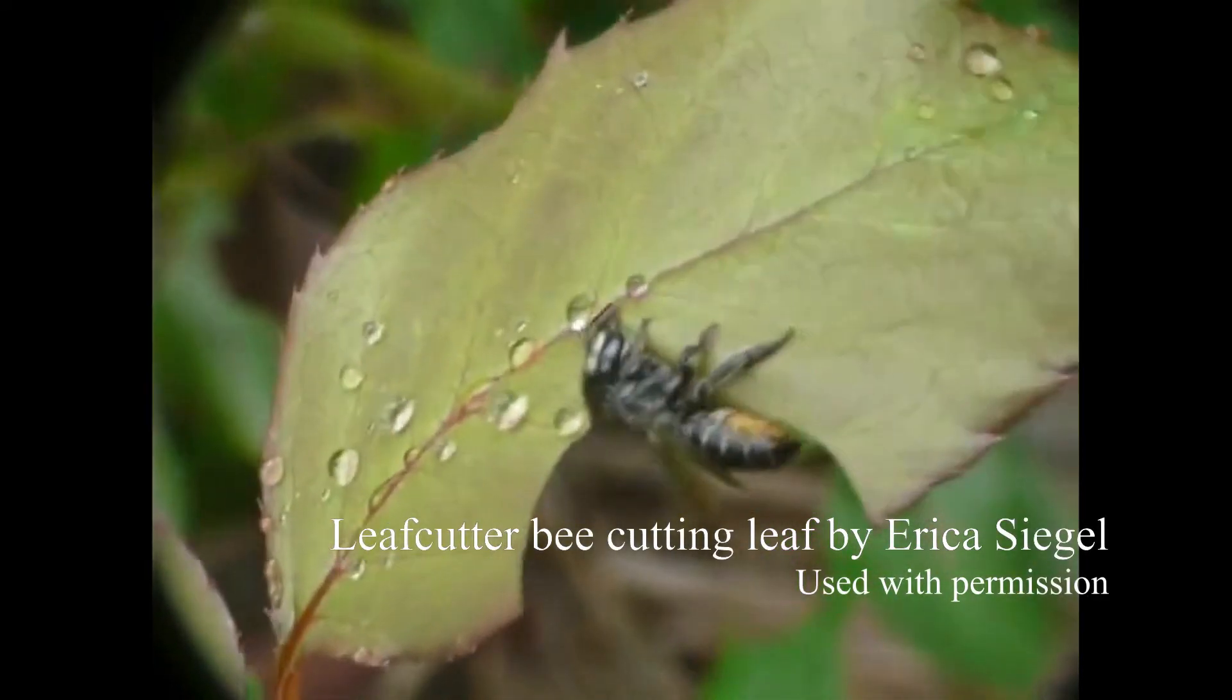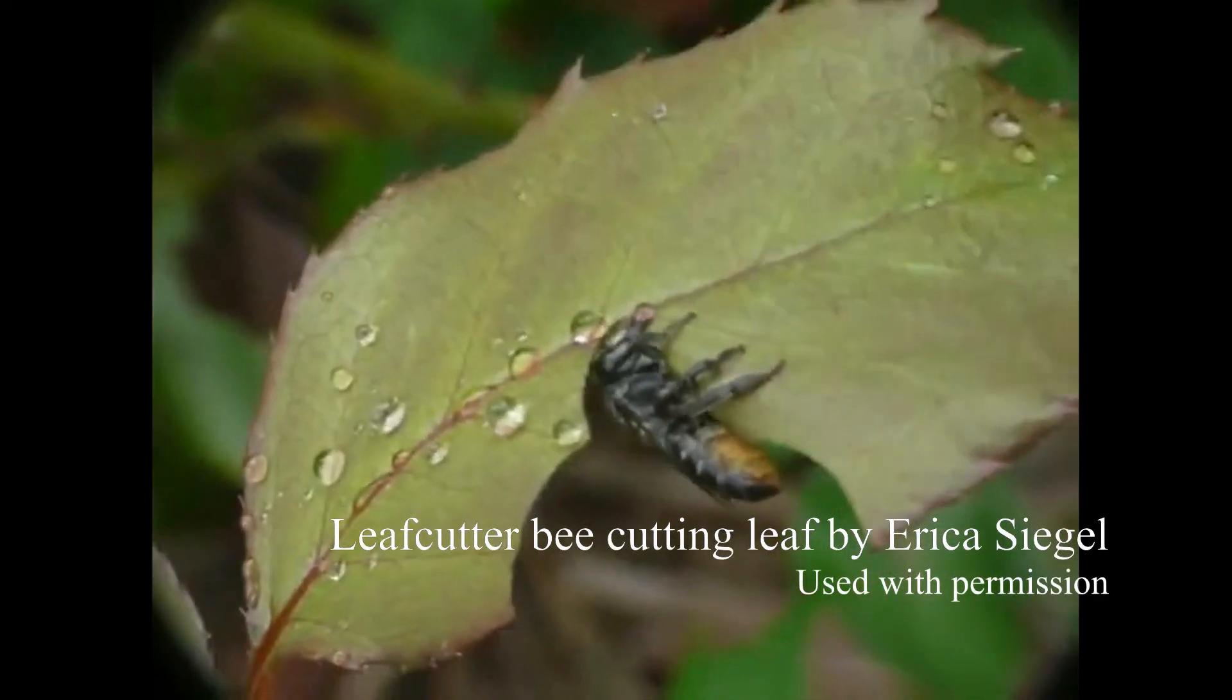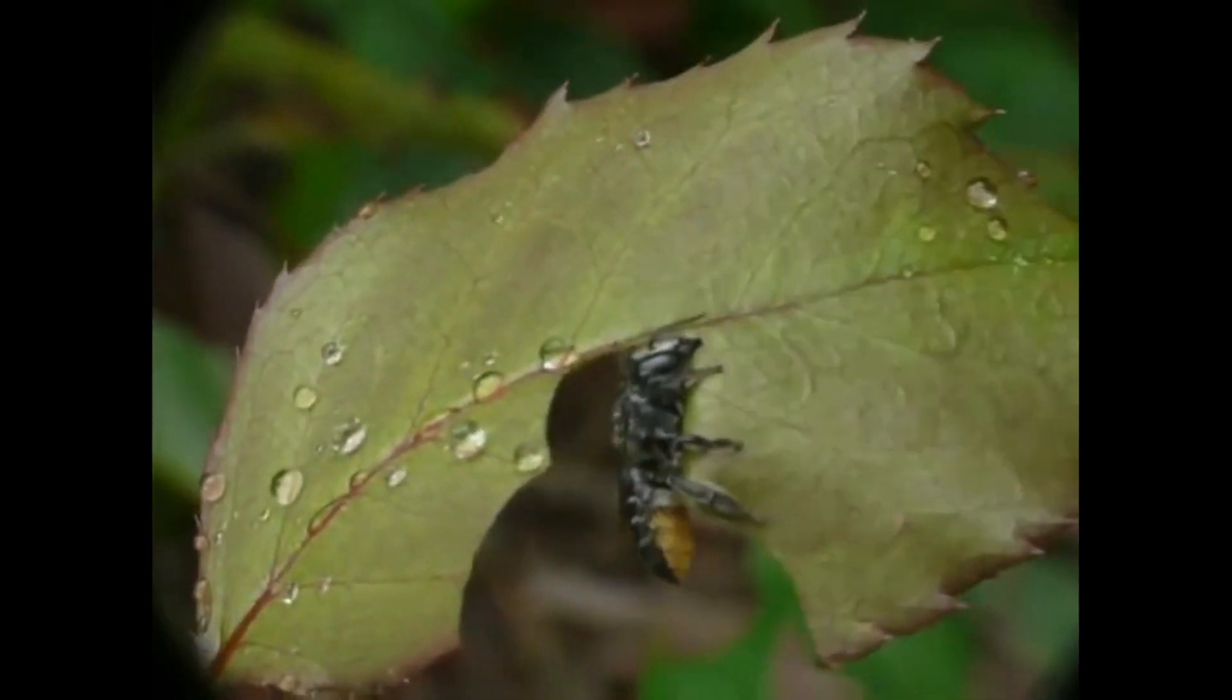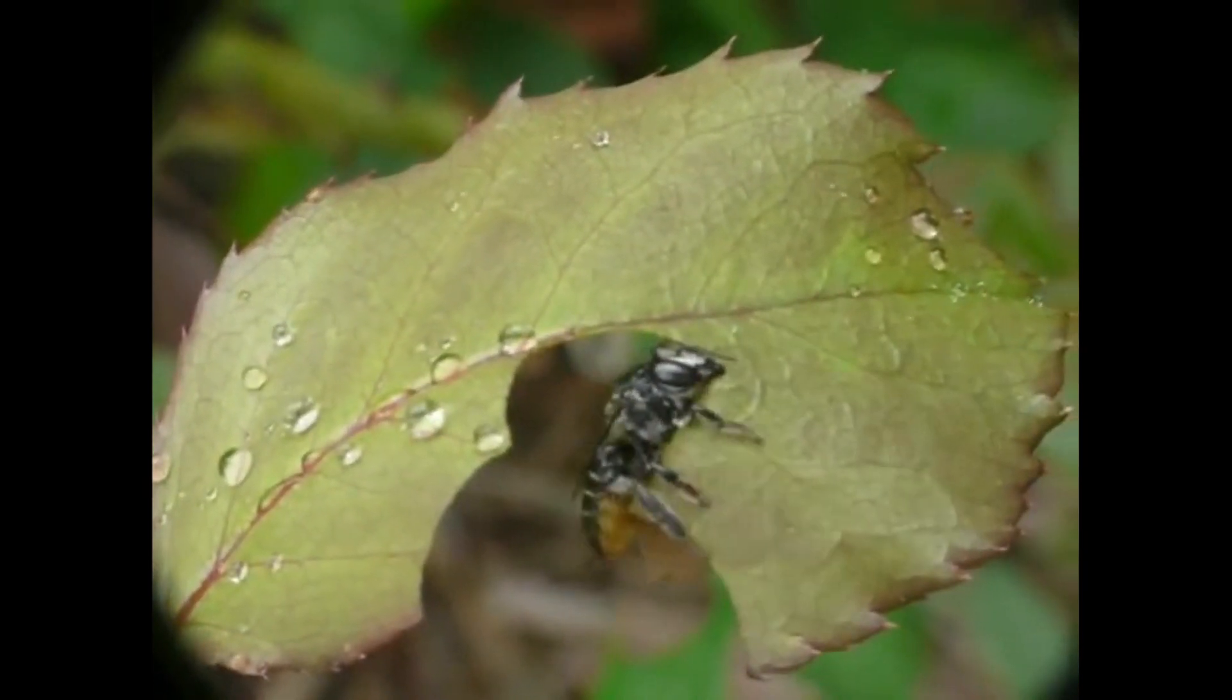Did you know we rely on bees for the pollination of around 64% of all crops? While you might be familiar only with the honeybee, there are many other types of bee, including the leafcutter.